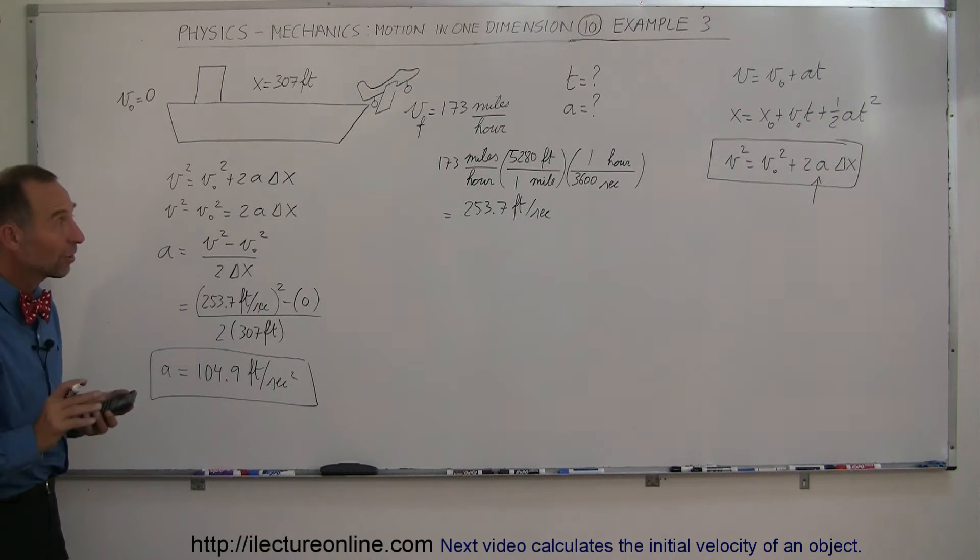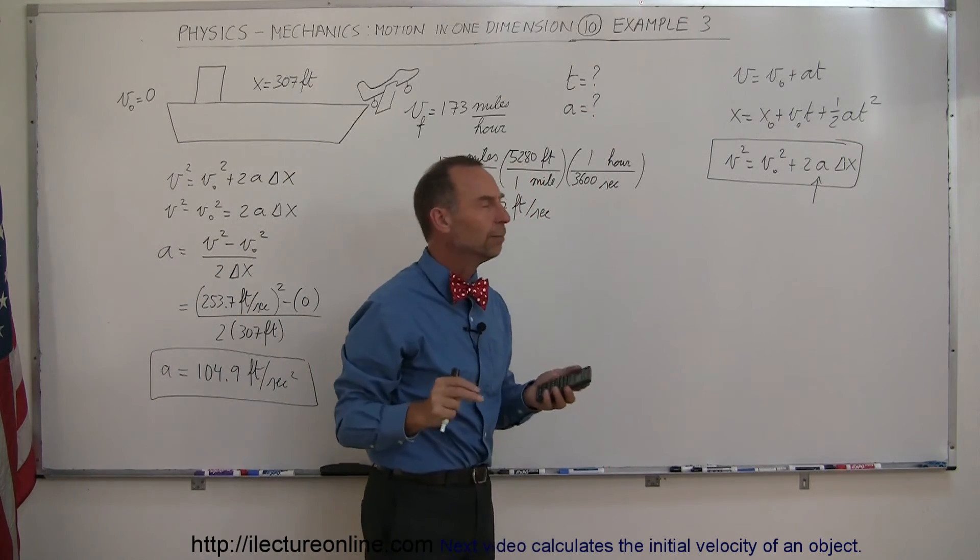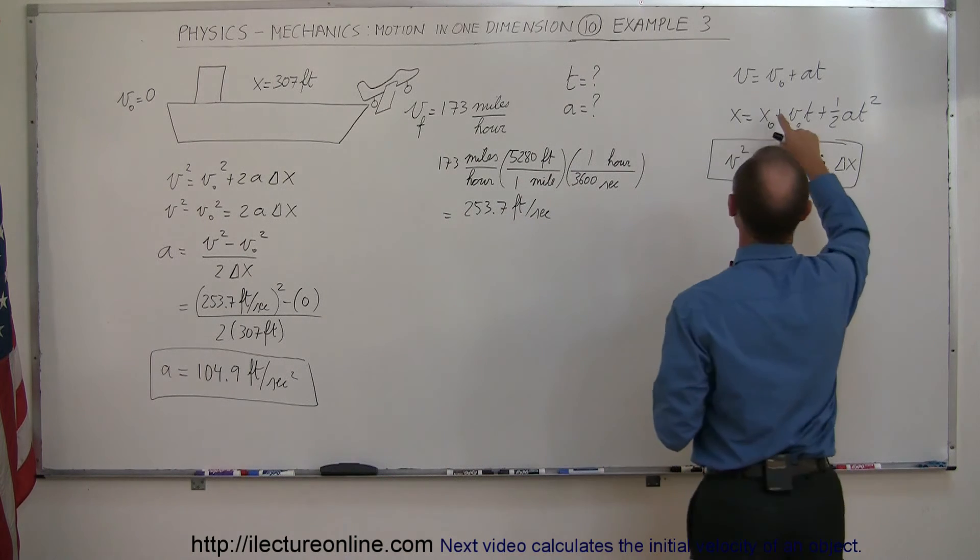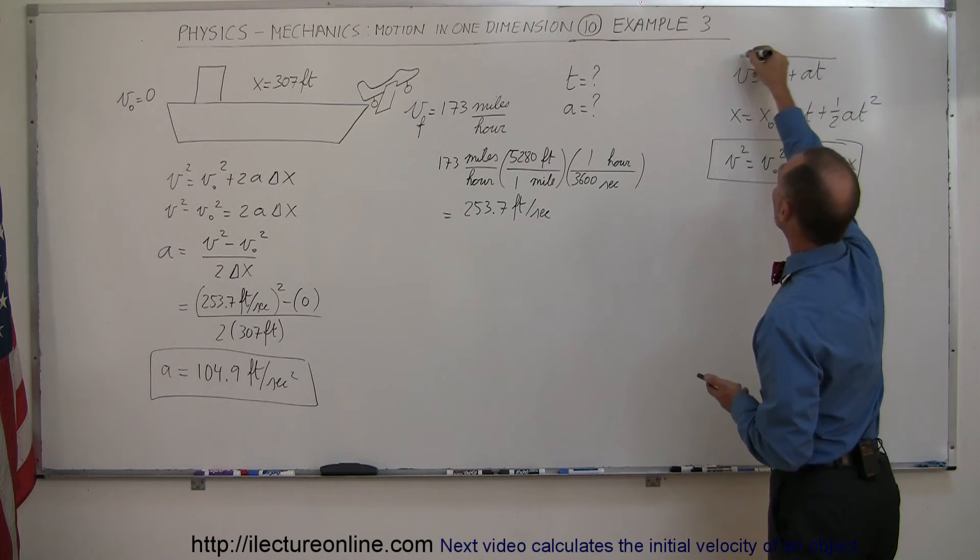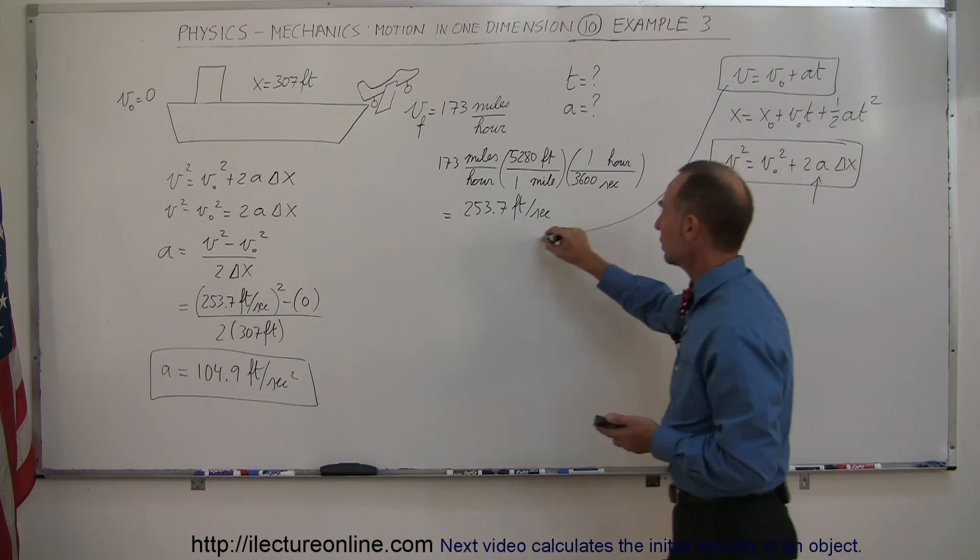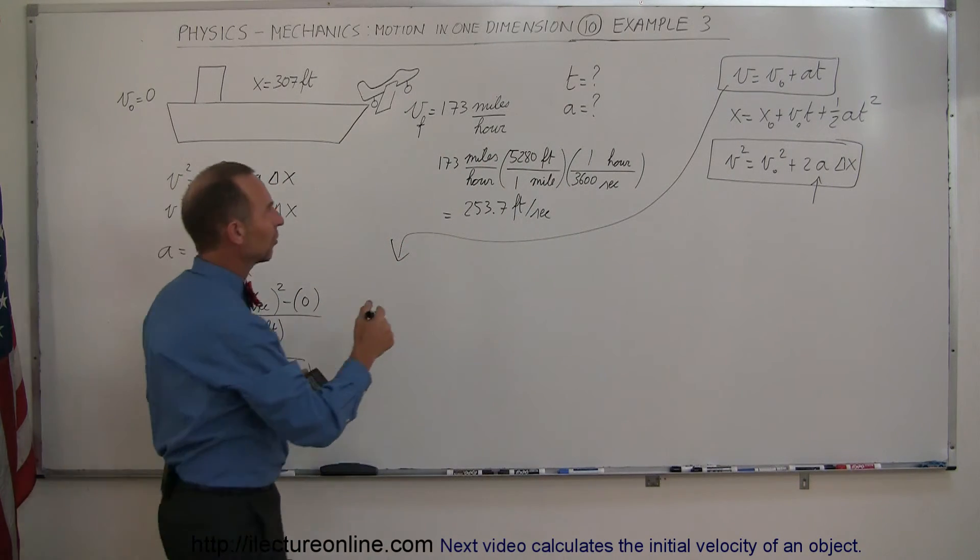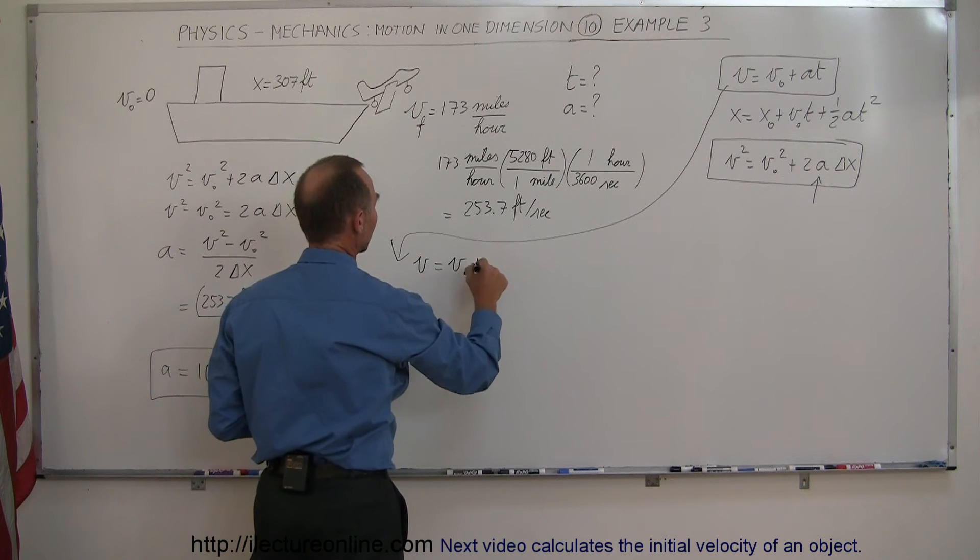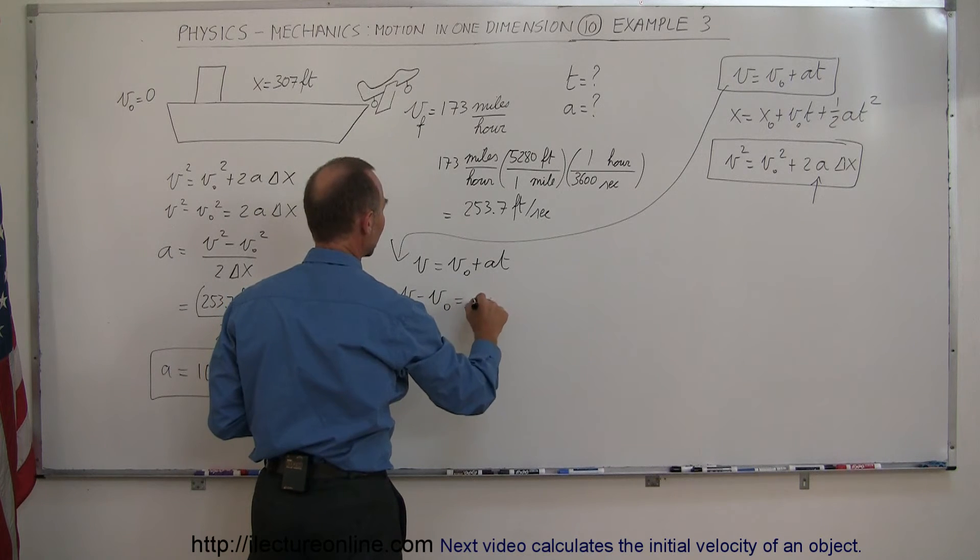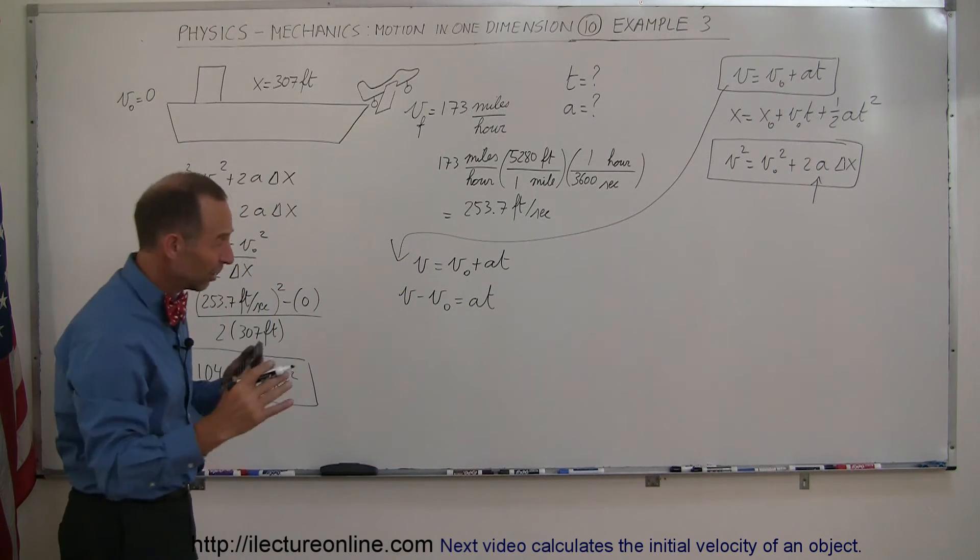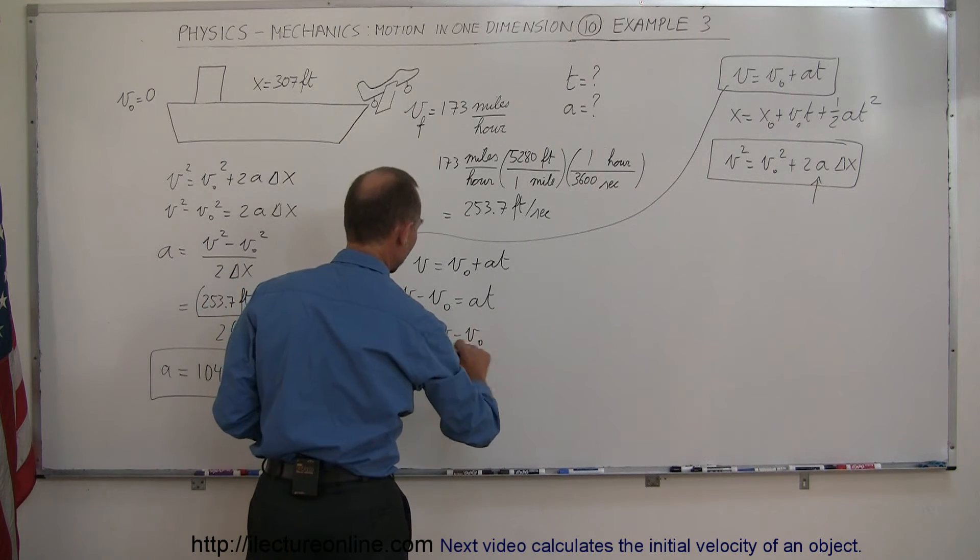Now that we have the acceleration, we now have to find the time, the other unknown. So what equation can I use now? Well, let's look over here. I know my final velocity. I know my initial velocity. I know my acceleration. I can now use this equation to find the time. Of course, I do have to rearrange the equation. So first of all, let's write V equals V sub nought plus AT. First I move the V sub nought across, so that becomes minus V sub nought equals AT. Then divide both sides by acceleration, flip the equation around, so we have time is equal to V minus V sub nought divided by the acceleration.